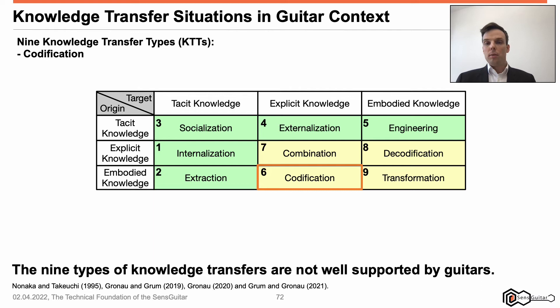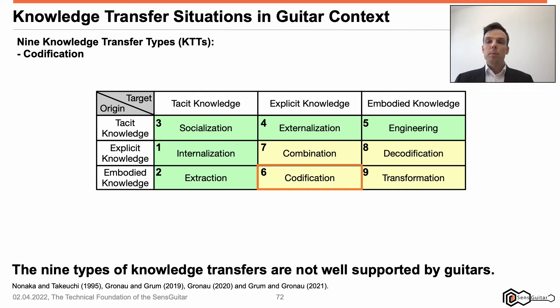Codification: embodied knowledge (origin) is perceived by a knowledge carrier and transferred to an explicit form of knowledge (target). For instance, if a person recognizes the formation ruleset on the basis of a song scale (extraction) and the ruleset is written down to a book (externalization), the description holds the codified knowledge about the formation ruleset. Since traditional guitars do not support extraction and externalization, codification is not supported by guitars yet.